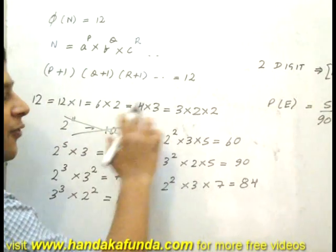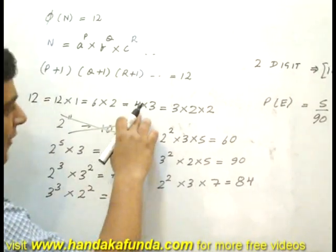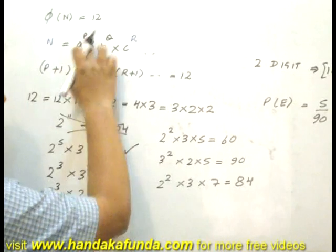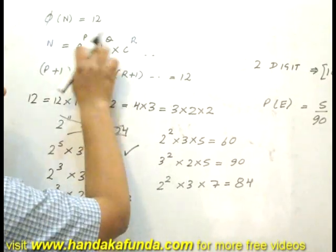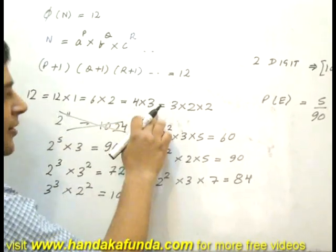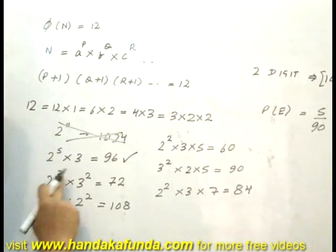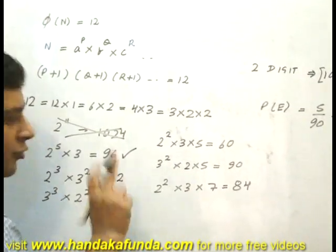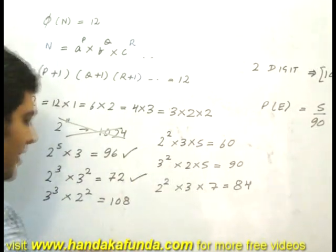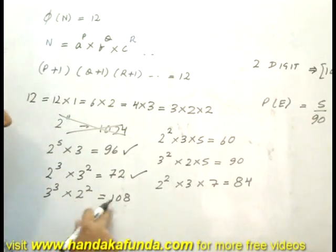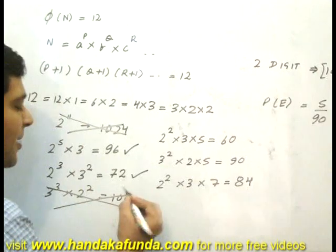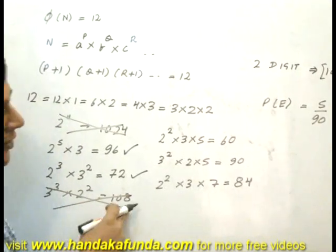Then I look at 4 and 3, so powers 3 and 2. I get 2 cube into 3 square, 72, a 2 digit number. Valid answer. 3 cube into 2 square goes above, it becomes 27 into 4, 108, which is invalid.